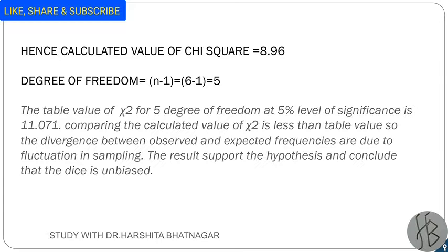Now calculate the degree of freedom by subtracting 1 from n, where n is the number of items. The numbers that can appear on the dice are 6, so the degree of freedom is 6 minus 1, which equals 5. The table value of chi-square at 5 degrees of freedom and 5% level of significance is 11.071.